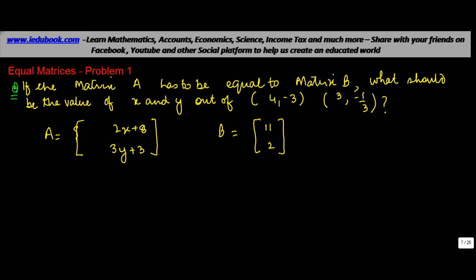So you are given another problem on equal matrices. Now, you are told that if the matrix A, the value of A is given, it contains two values. So this is of the order 2 by 1, has to be equal to matrix B. Matrix B, again, we know is 2 by 1.